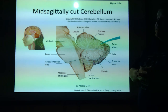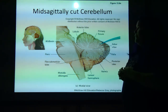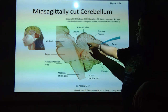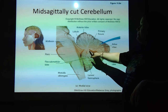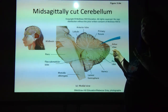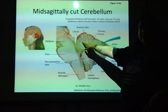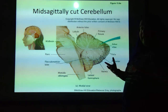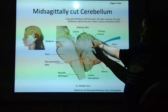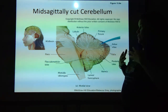Looking at the cerebellum — that mini brain in the back — if you look, you can see something that kind of looks like a tree. You've got the trunk and the branches coming out. That tree is actually called the arborvitae. Notice the tree is lighter than the leaves — the tree is the white matter and the folia, or the leaves out here, are actually the gray matter.